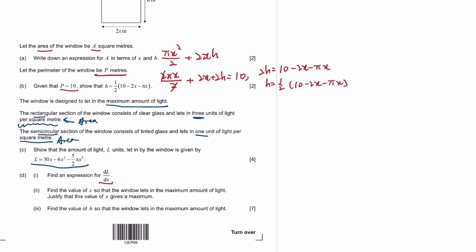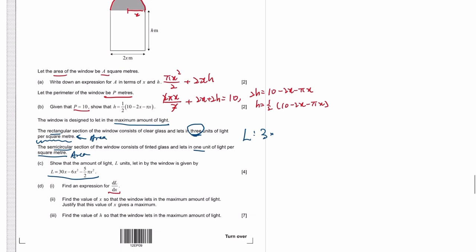Alright, so what's the amount of light let in? Well, the rectangular part let in 3 units of light per area. So the amount of light that goes through the rectangular part is 3 times the area of the rectangle, which is base times height.